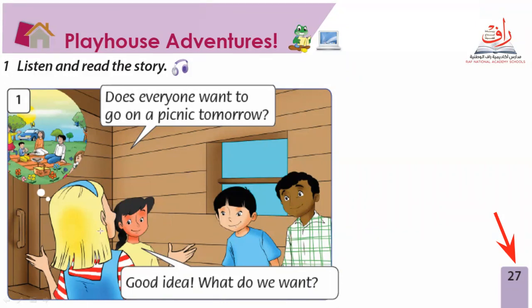In picture number one we can see Jenny, Lily, Max, and Yoshi. They are planning for a picnic. Let's plan a picnic — each one will bring things; they will buy from the supermarket so they can share and come to the picnic. Jenny is thinking about going on a picnic outside.